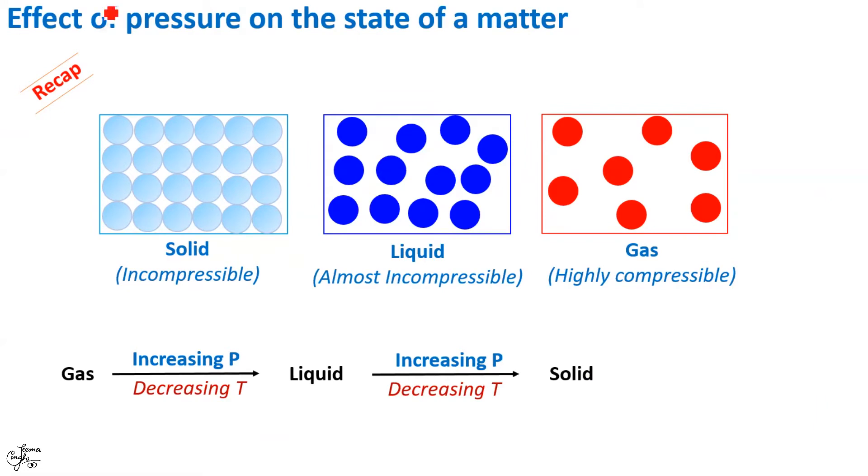Moving on to the effect of pressure on the state of a matter. We can recall that solids have negligible compressibility. They are almost incompressible. Similarly, liquids do have very small or negligible compressibility. Whereas, gases are highly compressible. The reason behind is that gases have large inter-particle spaces. Therefore, gases can be reduced in size or they can be compressed easily by applying pressure.